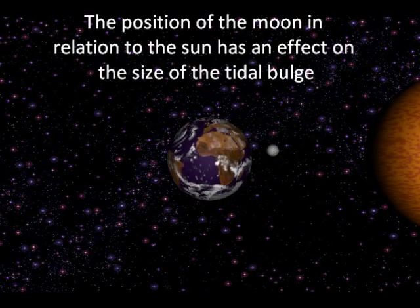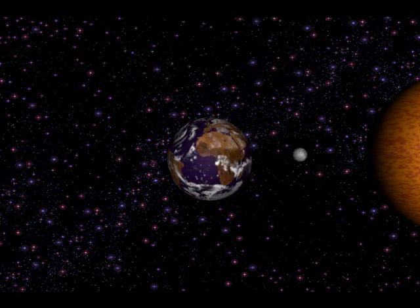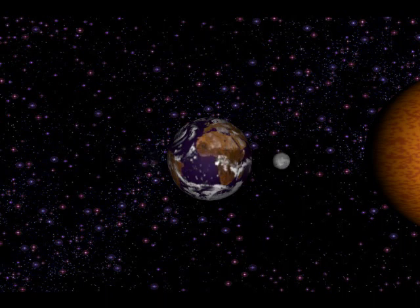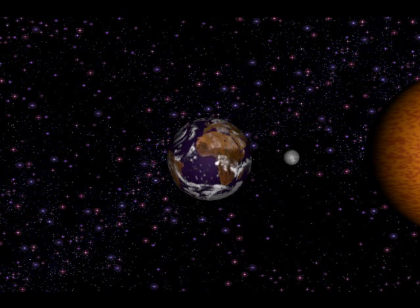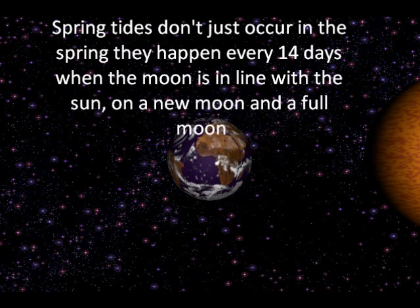The position of the moon within its 28-day cycle in relation to the sun is very important. It has an effect on what we call spring and neap tides. Spring tides don't just occur in the spring — they happen every 14 days when the moon is in line with the sun, at a new moon and a full moon.